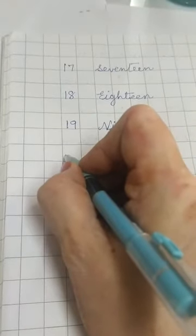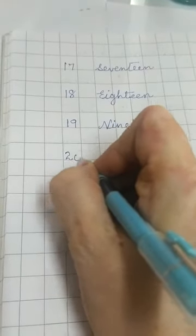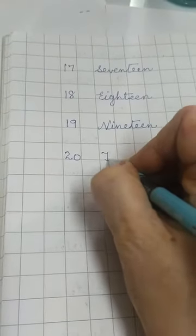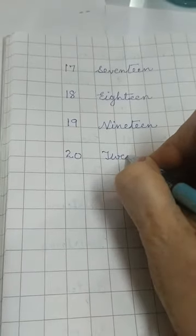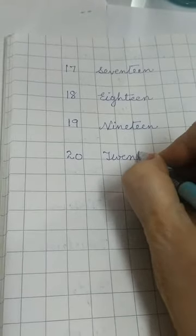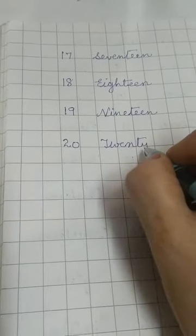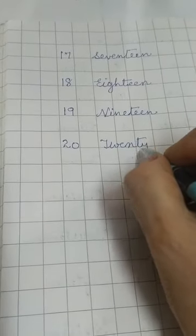And here comes the new series. 2-0, twenty. Now 2. T-W-E-N-T-Y, N-T-Y, twenty.